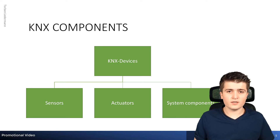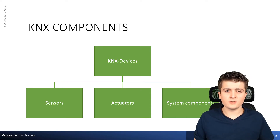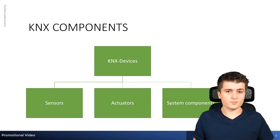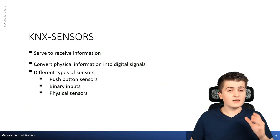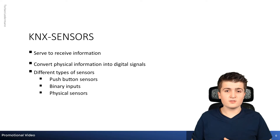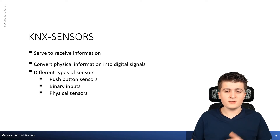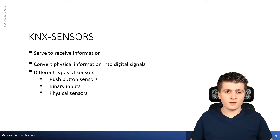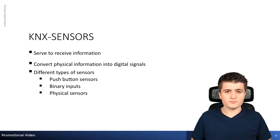For example, there are blind actuators that also have two binary inputs which you can connect to window contacts or conventional push buttons. But first let's take a closer look at KNX sensors. As already mentioned, they are for data acquisition — they get physical information and convert it into digital KNX telegrams.